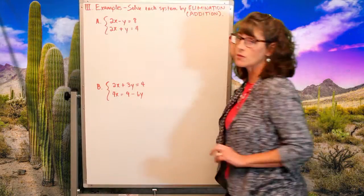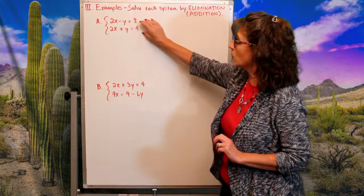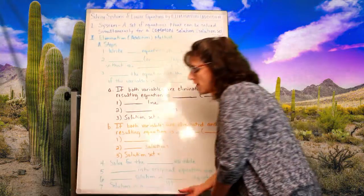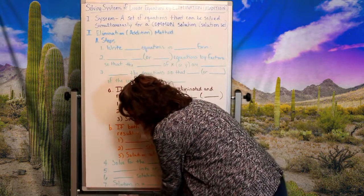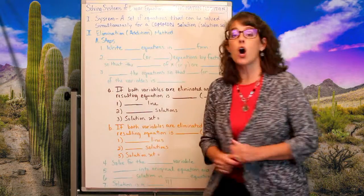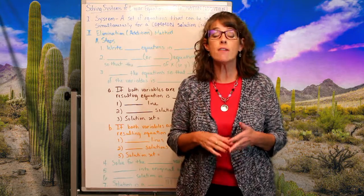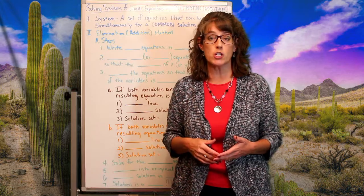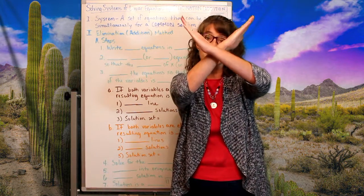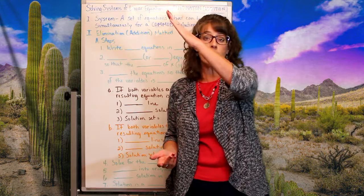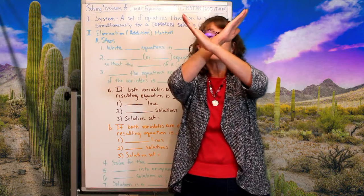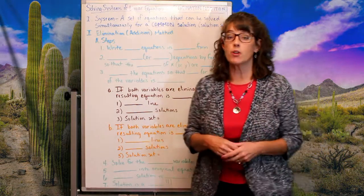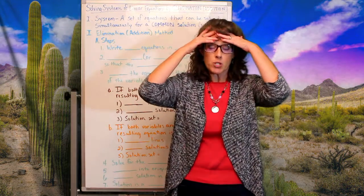Remember a system is a set of equations that can be solved simultaneously for a common solution. I've got two examples of systems here — two equations that create a system. To solve it, I'm looking for the solution common to both equations. If I graphed both lines, that point of intersection would be the common solution.